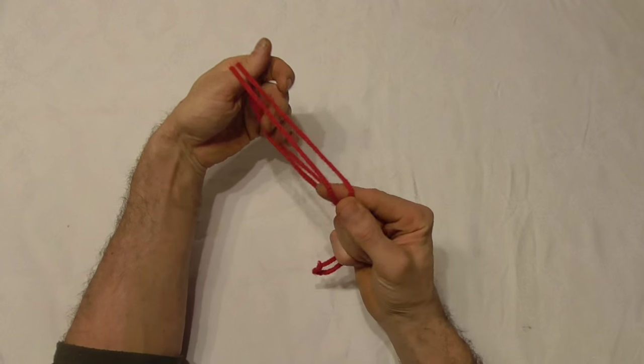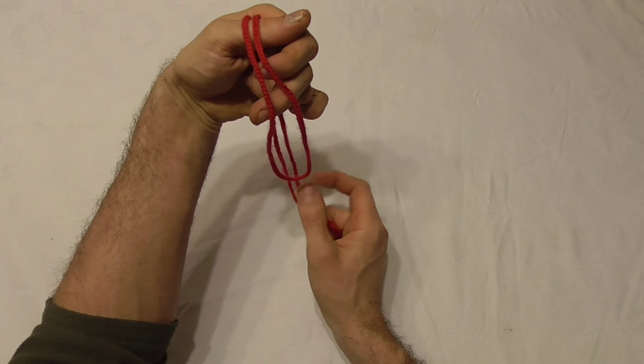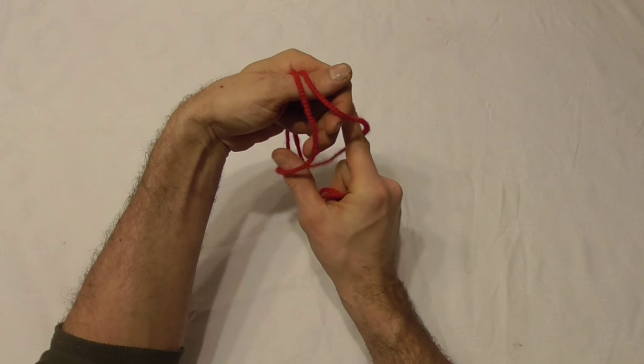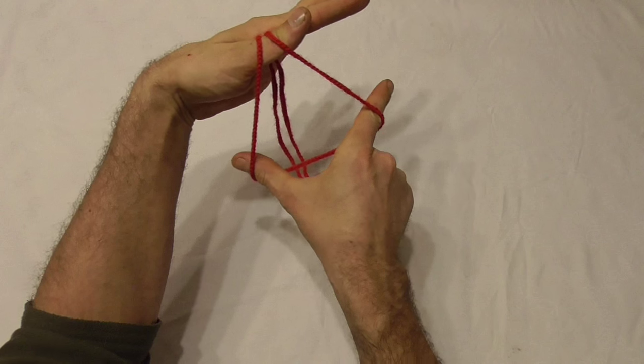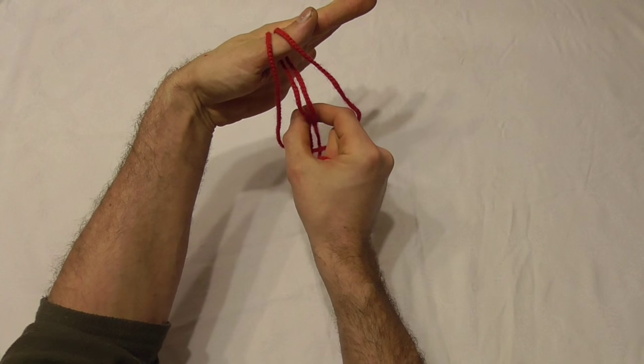If we go to this front loop that's over our thumb, we want to put our two fingers on our right hand - the thumb and pointer finger - through that loop. Grab the two strings that are behind on the thumb